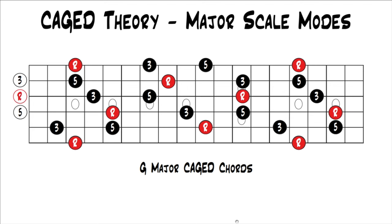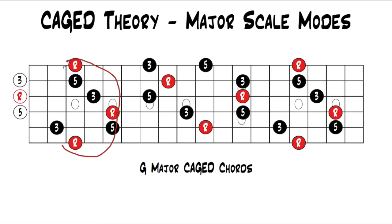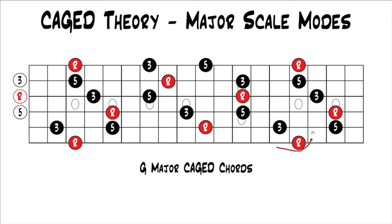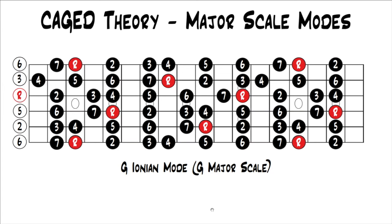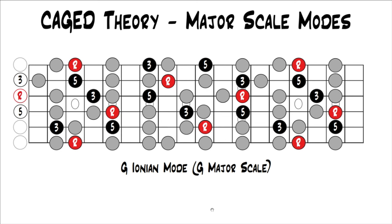On your screen right now are the major CAGED chords in the key of G. Here's the G shape — you'd either leave off the three or the five. Here's the E shape, the D shape, the C shape, the A shape, and then we're back at the G shape one octave higher. In the last lesson we looked at how the major scale fit around that — the G major scale, which is also the G Ionian mode. You can see all the CAGED chords with the intervals highlighted in red or black, and the rest of the major scale in gray, making it easy to visualize how the CAGED chords fit within the major scale.